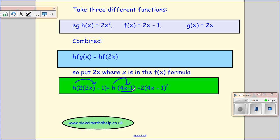Now this is now our input for h of x. So every time we see x here, we're going to put 4x minus 1. So this is 2 lots of 4x minus 1 squared. 2 lots of 4x minus 1 squared.